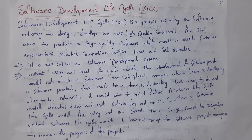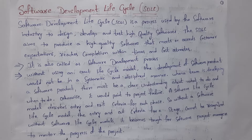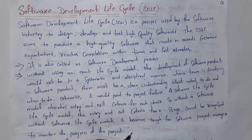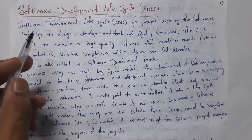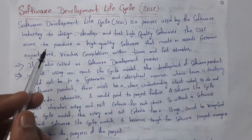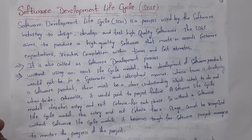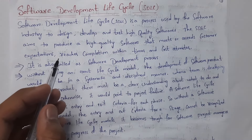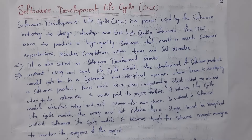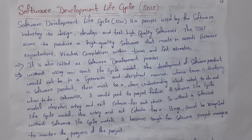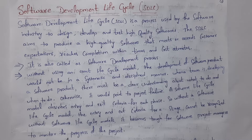In the first lesson: what is software development life cycle? We also call it software development process. A process is nothing but a sequence of steps followed by a software company in order to develop high quality software. So software development life cycle is a process used by software industry to design, develop, and test high quality software. The main aim is to produce high quality software that meets customer expectations and completes within a short time with less cost.